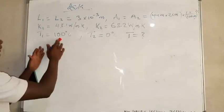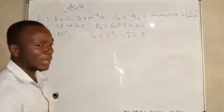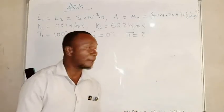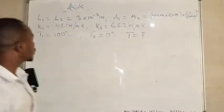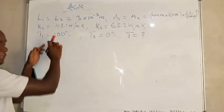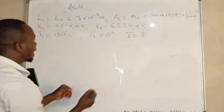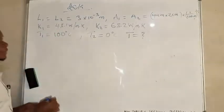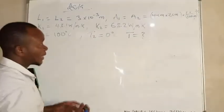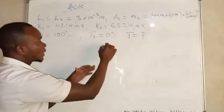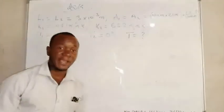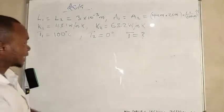Temperature T1 for metal plate 1 is 100 degrees Celsius, and metal plate 2 is at 0 degrees Celsius. We need to find the temperature of the solid interface. When the two metal plates reach thermal equilibrium, we assume heat flows from plate 1 at 100°C to plate 2 at 0°C. The equilibrium temperature at the interface must lie between 0 and 100 degrees Celsius.